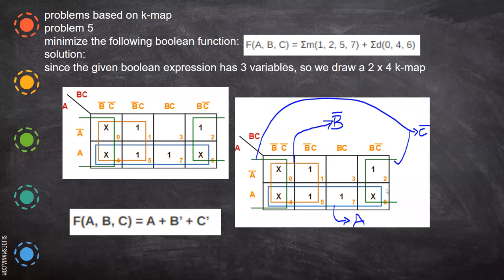When you take this, A is there. The whole thing — B, C is gone. So A. And for this corner quad, this is gone, and if B is gone, then we have C bar. So this is the reduced equation.